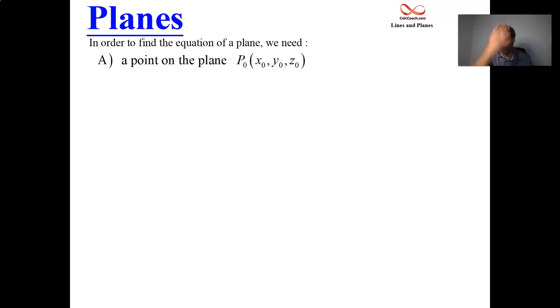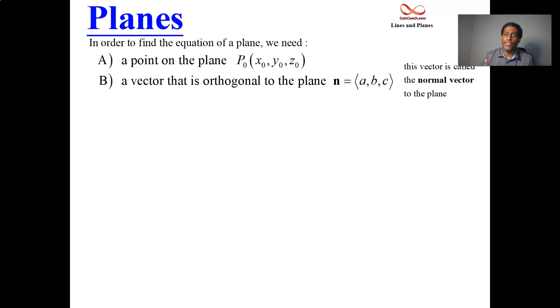There's two things we need. First up, we need to have a point that's on the plane. I call that point P0, generically with coordinates x0, y0, z0. But we also need a vector that is orthogonal to the plane. We use the letter N for that vector and it's called the normal vector to the plane, generically with A, B, C as its components.